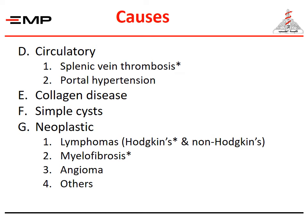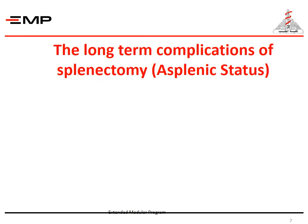Splenectomy is sometimes used for staging of Hodgkin's disease when no other extra-nodal spread is apparent. This was needed to decide whether the patient would need chemotherapy. As chemotherapy became a rather standard treatment in all patients with Hodgkin's disease, the need for staging splenectomy has declined. Previously the spleen was considered a vestigial organ — something like the vermiform appendix — that can be removed without any harm to the health of the human being. A few decades ago the role of the spleen was identified and more focus on its importance was made.